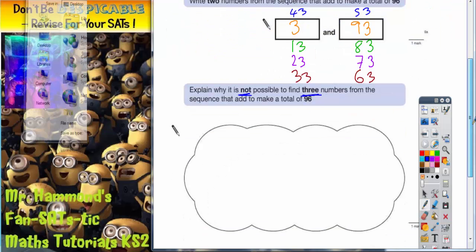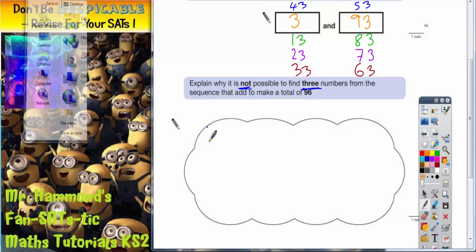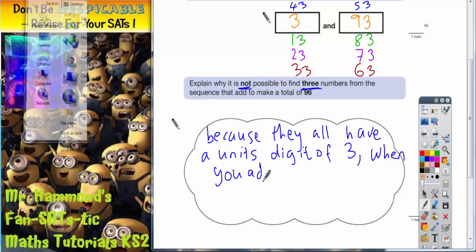They all have a unit's digit of 3. So because they all have a unit's digit of 3, when you add 3 of them together, think about what this would give you. If they've all got a unit's digit of 3...